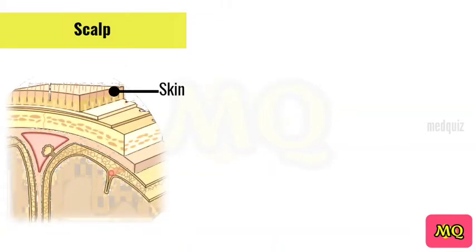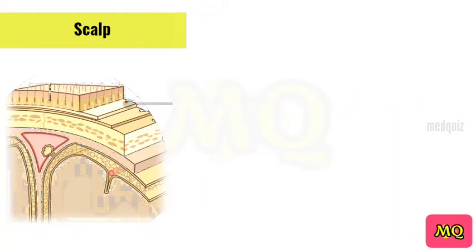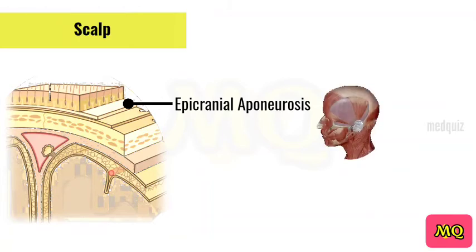Skin contains numerous hair follicles and sebaceous glands. Dense connective tissue connects the skin to the epicranial aponeurosis; it is highly vascularized and innervated, and the vessels are highly adherent to the connective tissue so they are unable to constrict if lacerated. Therefore, the scalp can be a site of profuse bleeding.